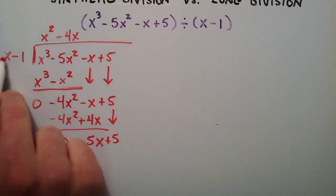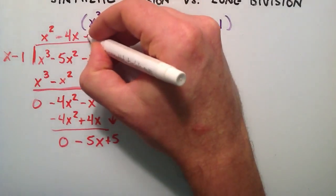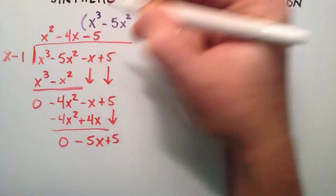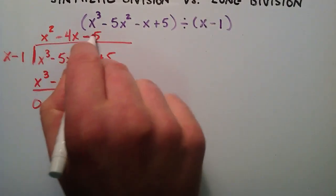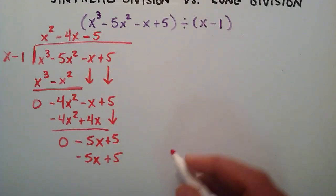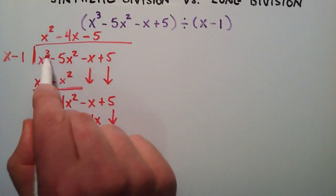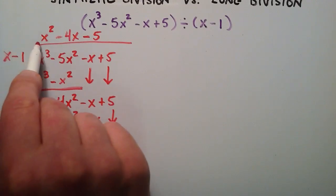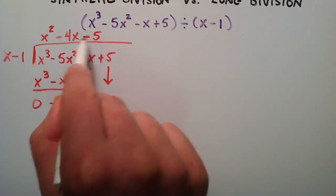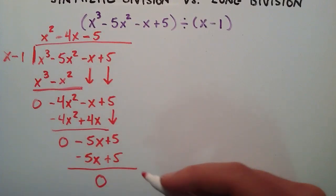Once again, what do we have to multiply x by in order for it to equal negative five x? The answer is negative five. So x times negative five gives us negative five x, and negative one times negative five gives us plus five. When we subtract this from this, we end up with zero, so we're done. We found that x to the third minus five x squared minus x plus five, divided by x minus one, equals x squared minus four x minus five. That was the long division method.